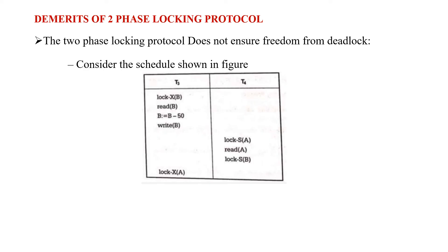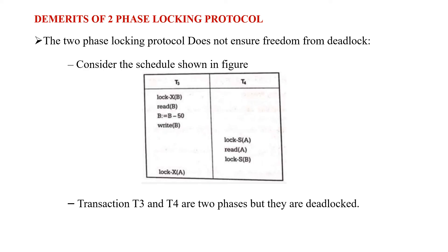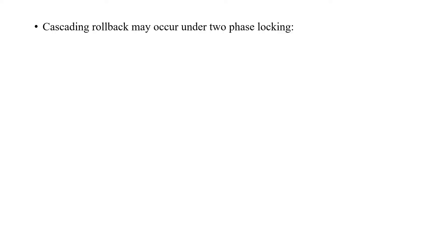T3 and T4 are in a deadlocked state because T3 has not released data item B, and T4 is trying to lock that same data item in shared mode while T3 is waiting for A. This demonstrates that the two-phase locking protocol does not ensure freedom from deadlocks, which is one of its drawbacks.